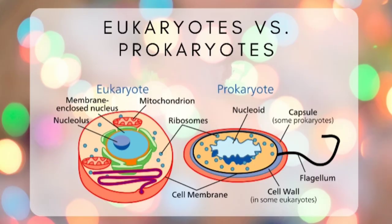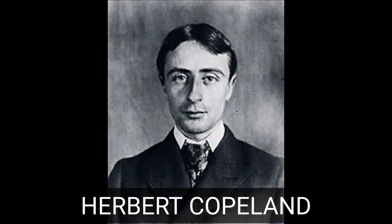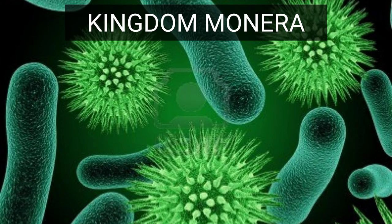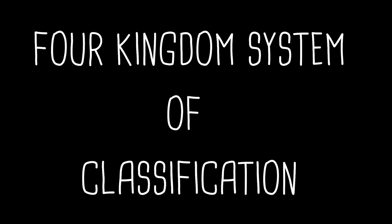In the course of time, scientists learned more about the diversity of microorganisms and discovered differences in the cell wall of organisms. Herbert Copeland proposed a new kingdom Monera, in which he placed bacteria since they are all prokaryotes. This is also known as the four kingdom system of classification.